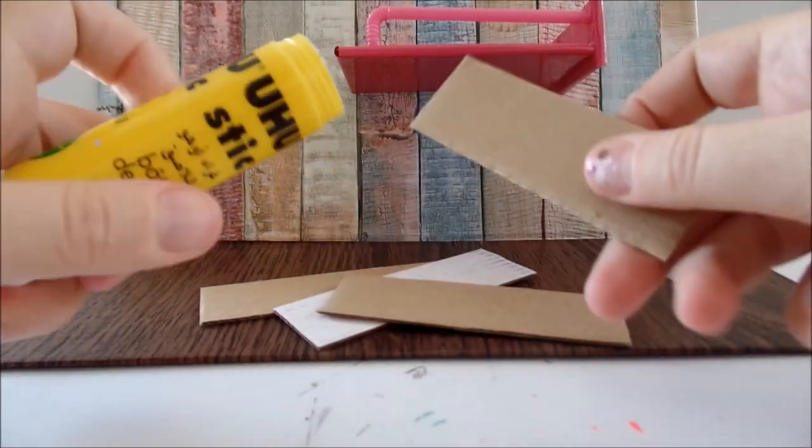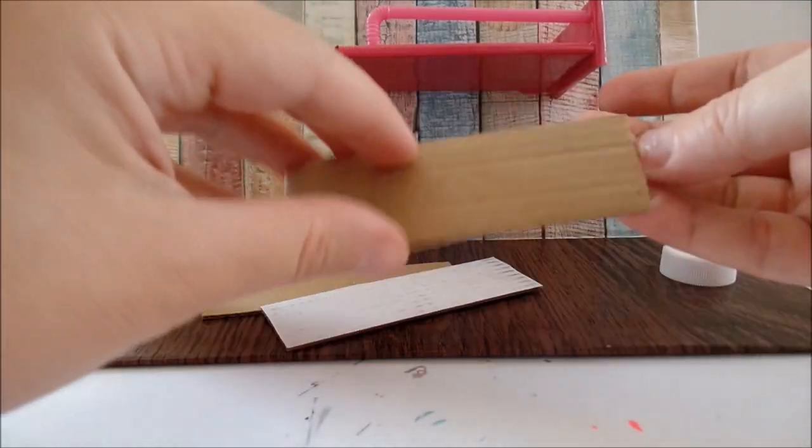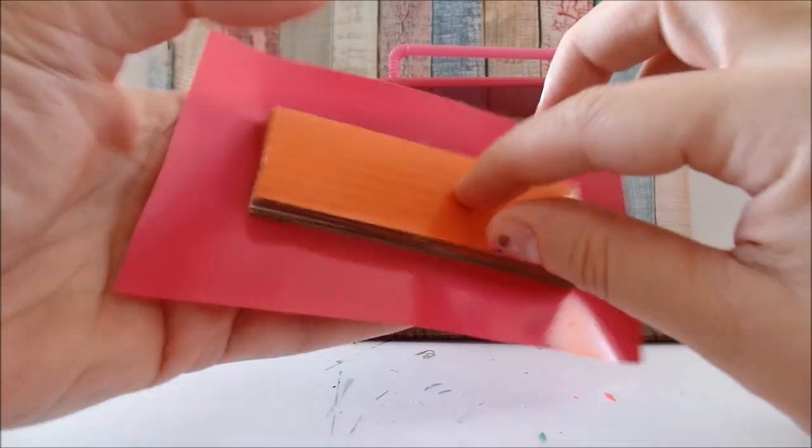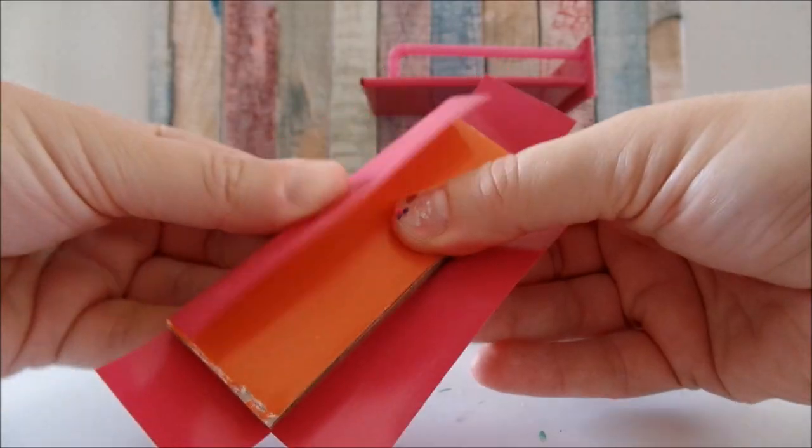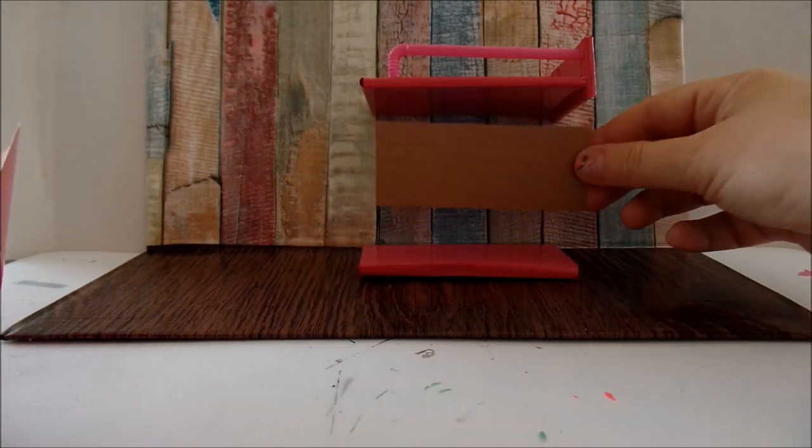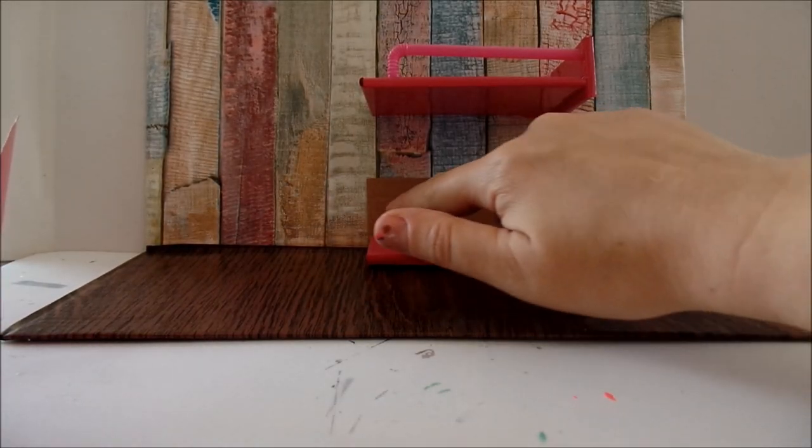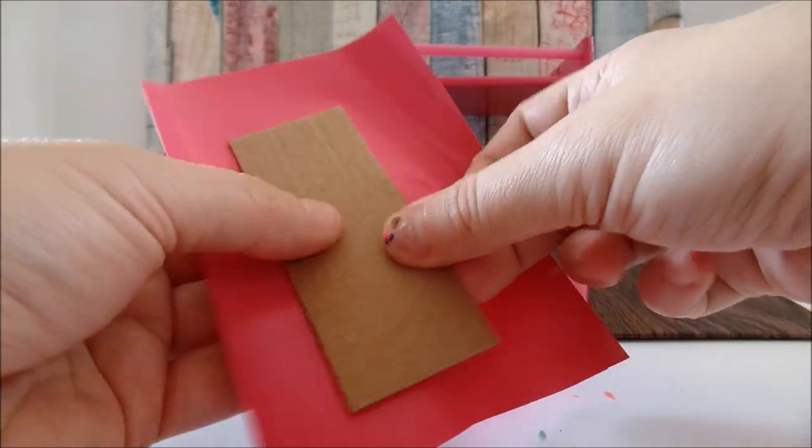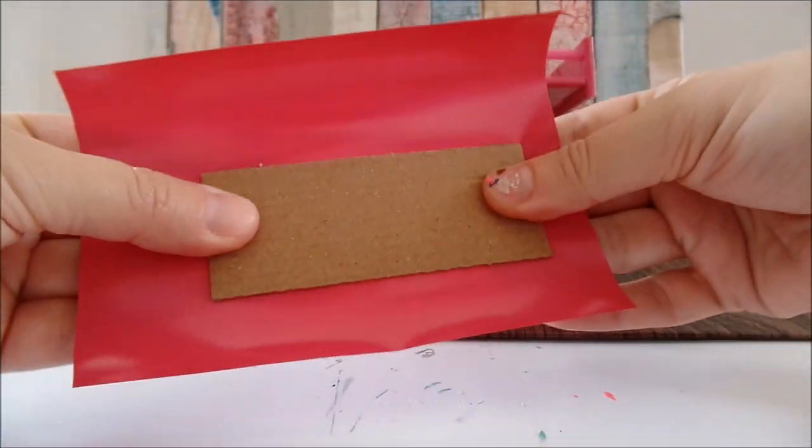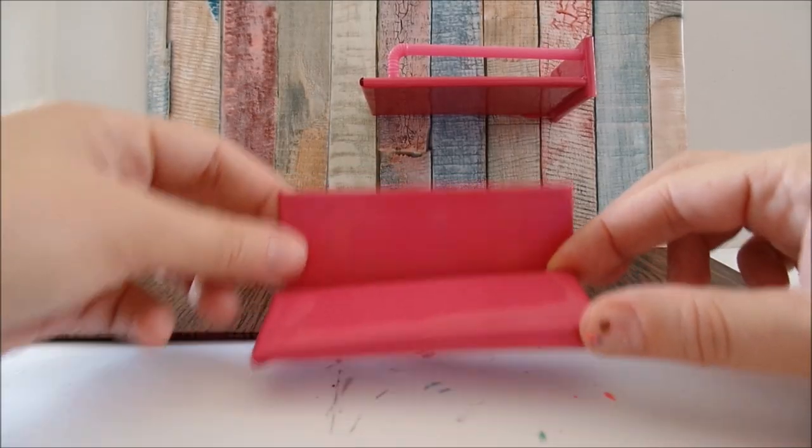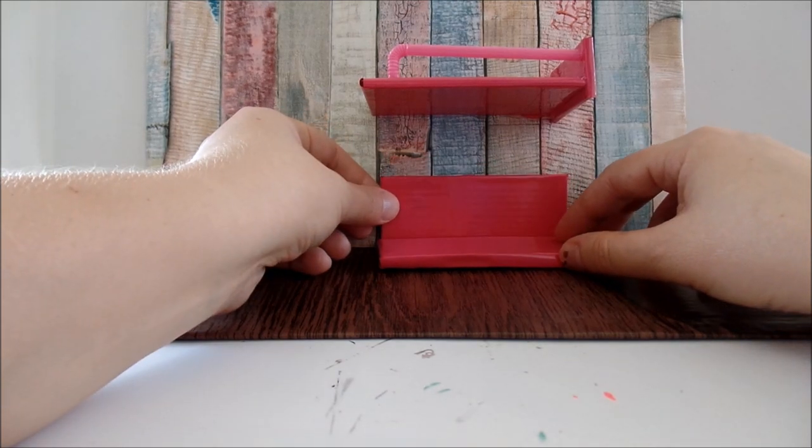I cover it with the contact paper and I want another piece of cardboard to place at the back, so I cover it with contact paper as well and I will glue them under the bed.